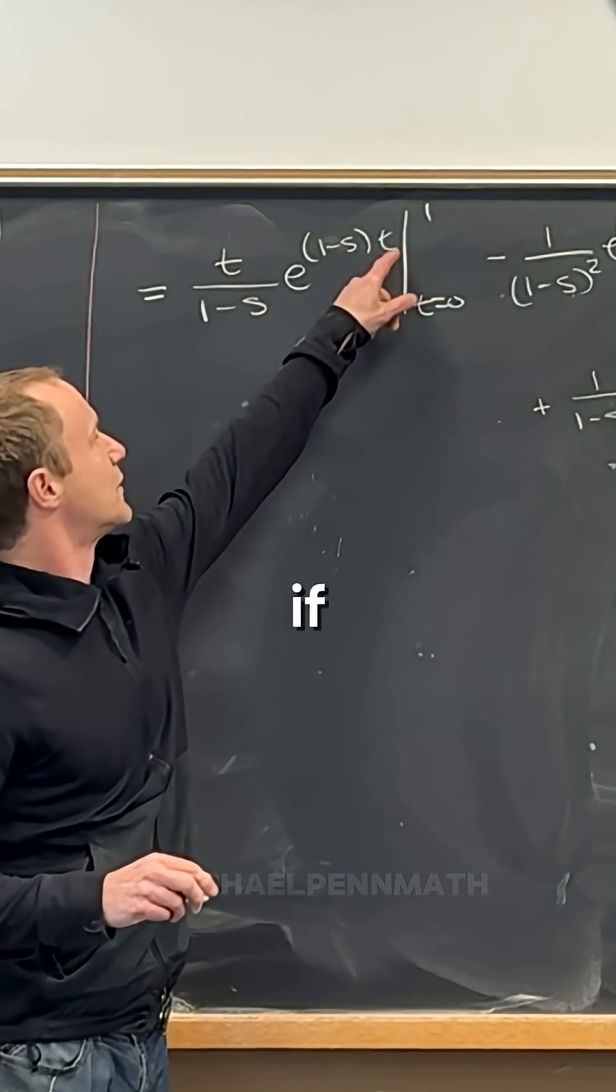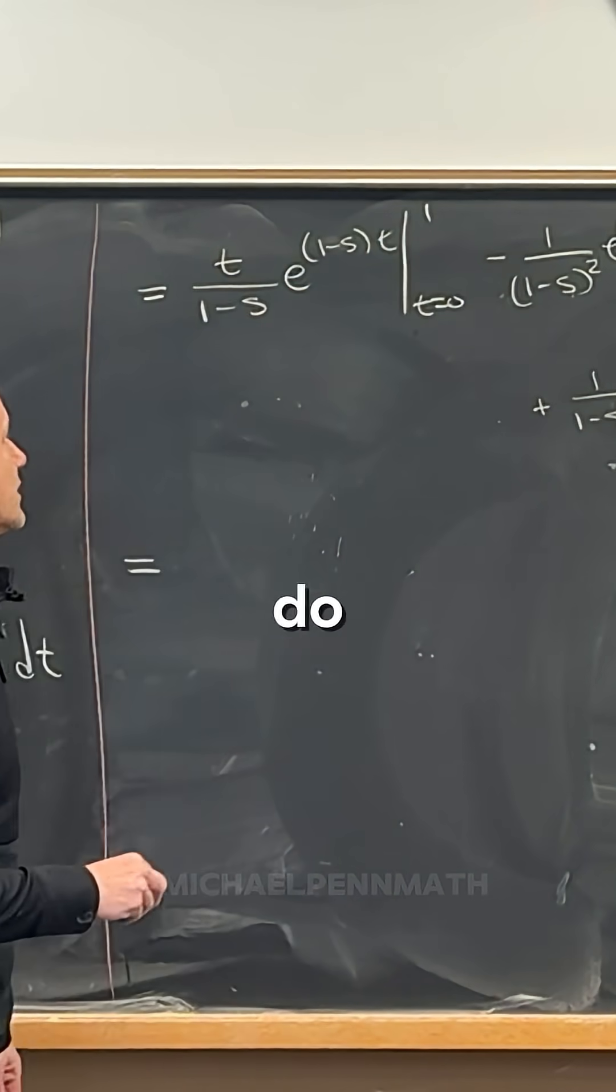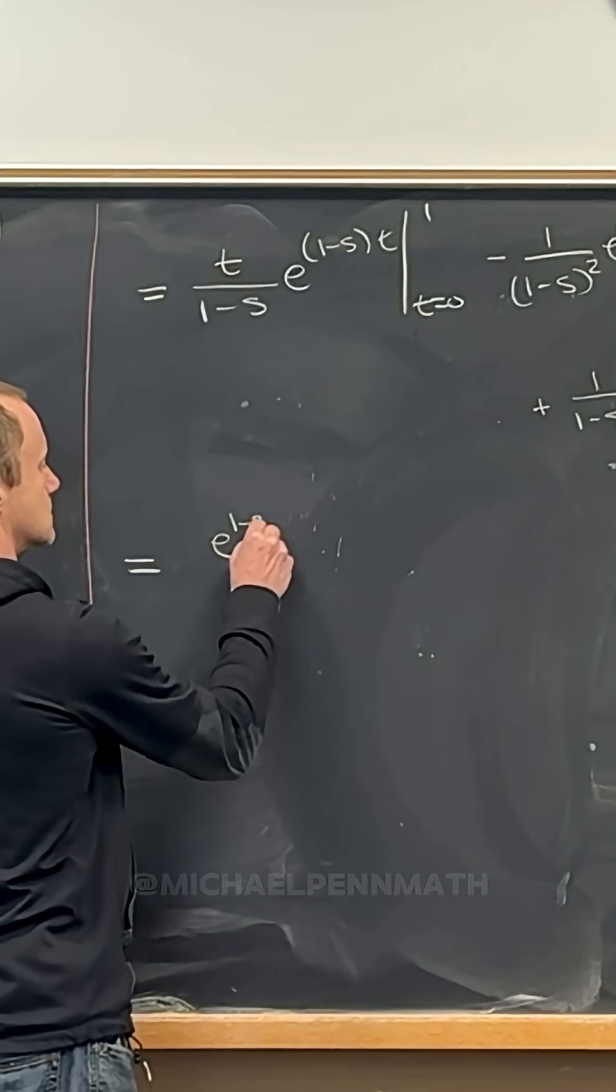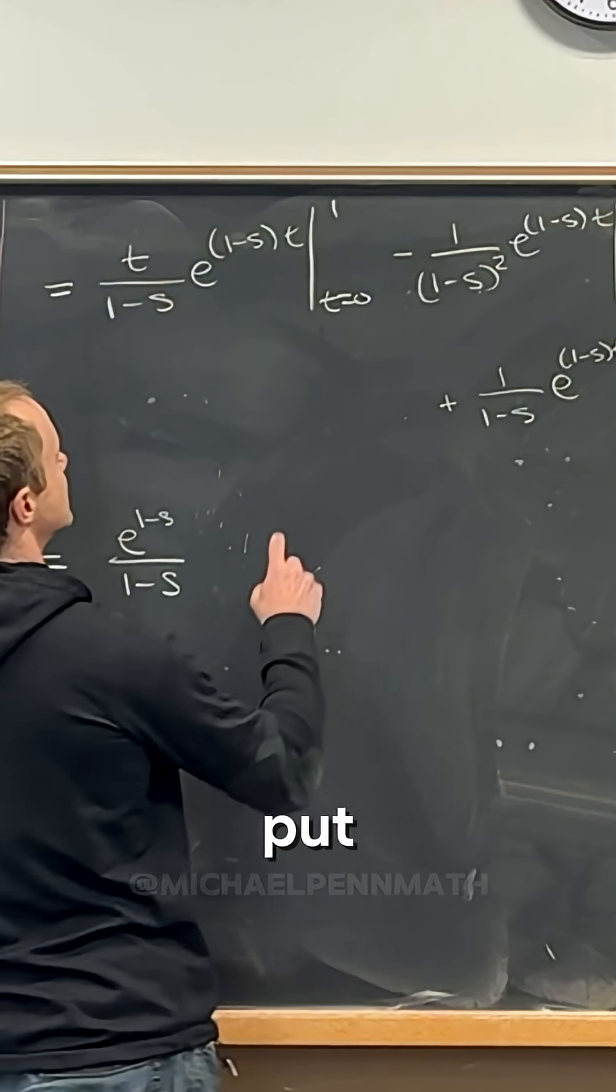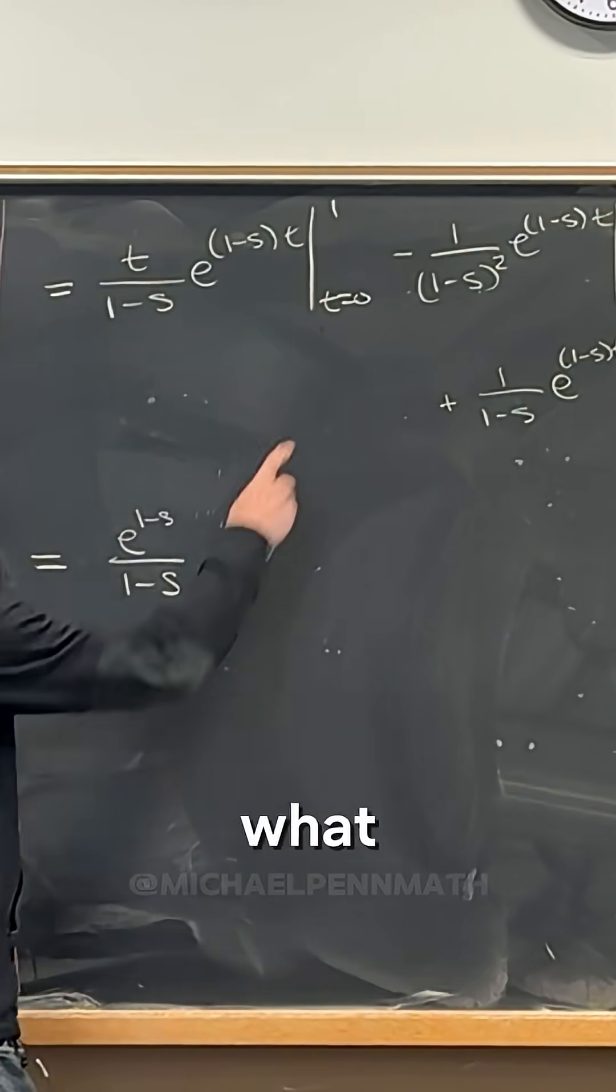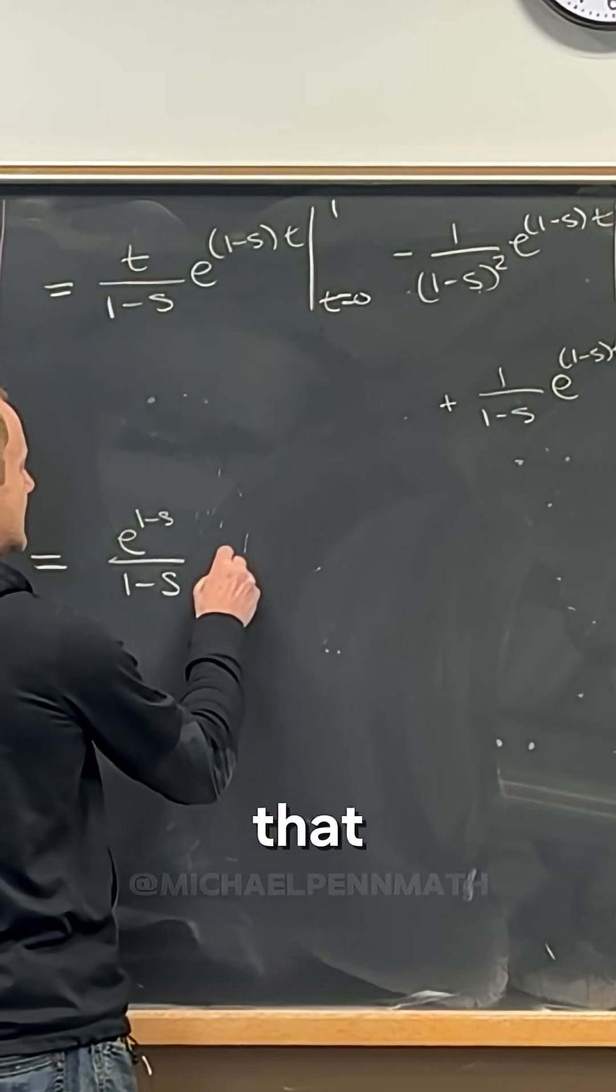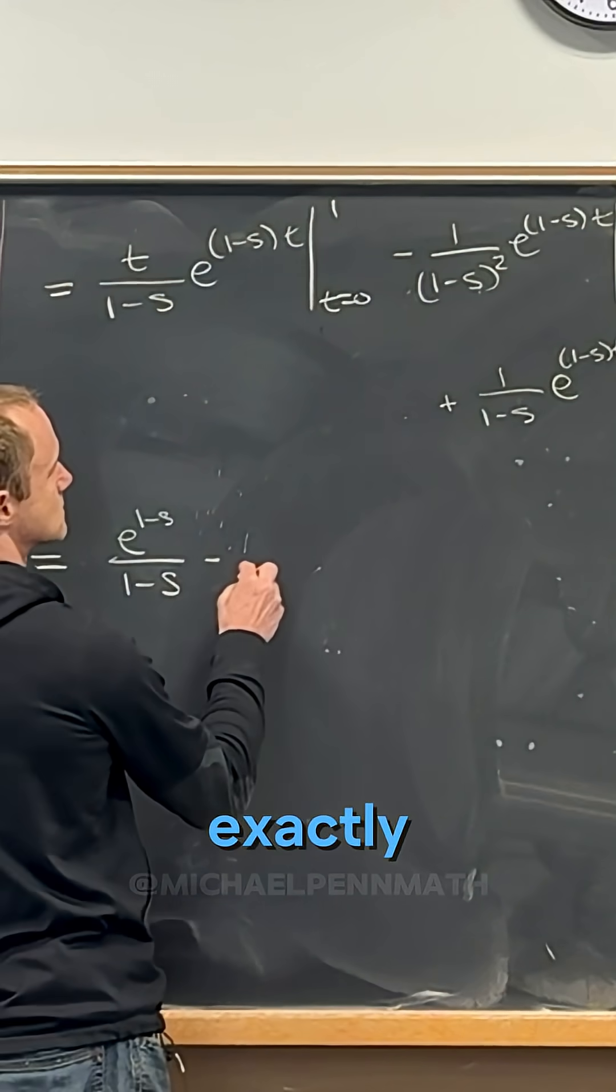So if we put t equals one into this, what do we get? Yeah, good. e to the one minus s over one minus s. Then what if we put t equals zero into that? And then what if we put t equals one into that? It'll basically be exactly the same as before.